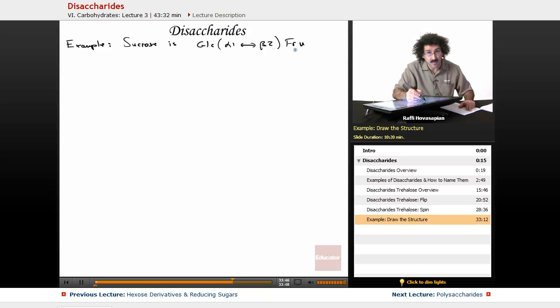So glucose is a hexose, it's a six-membered sugar. Fructose, remember, is a five-membered ring sugar.